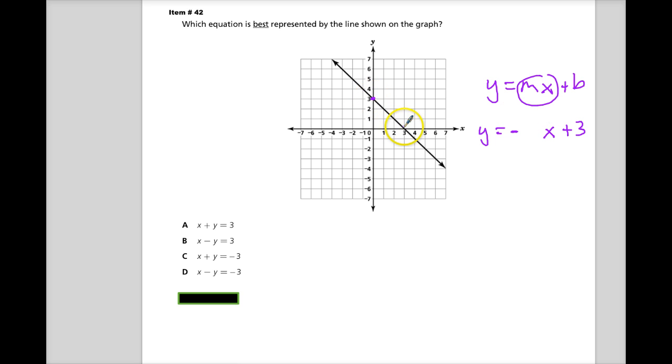I need to figure out another point. Here's the point that crosses right on the edges. It goes down 1, 2, 3, and over 1, 2, 3. So it looks like it's going down negative 1. And that's my slope.